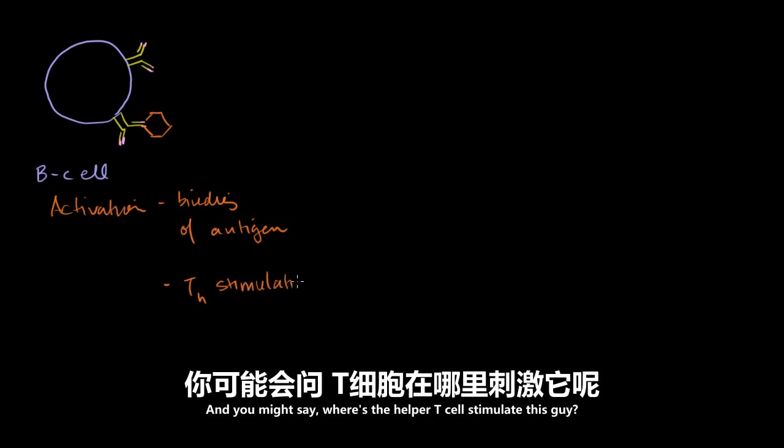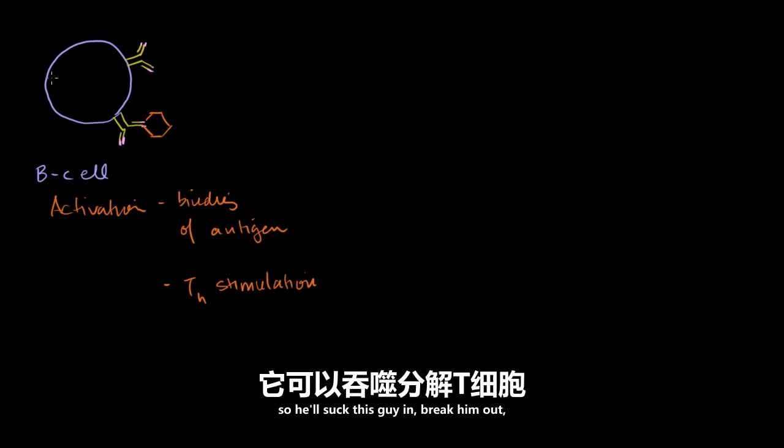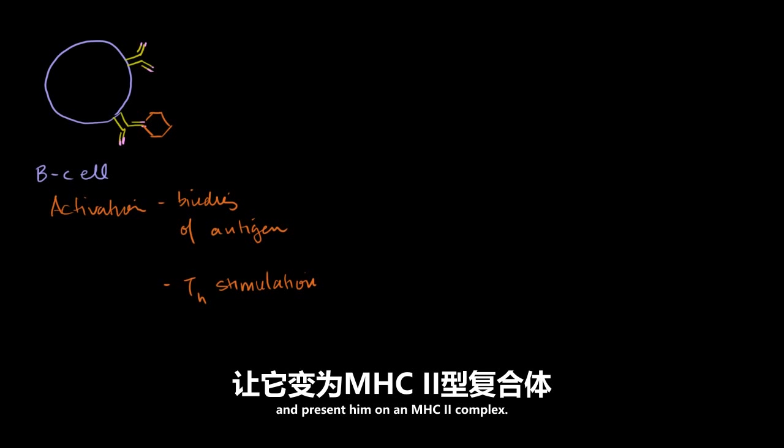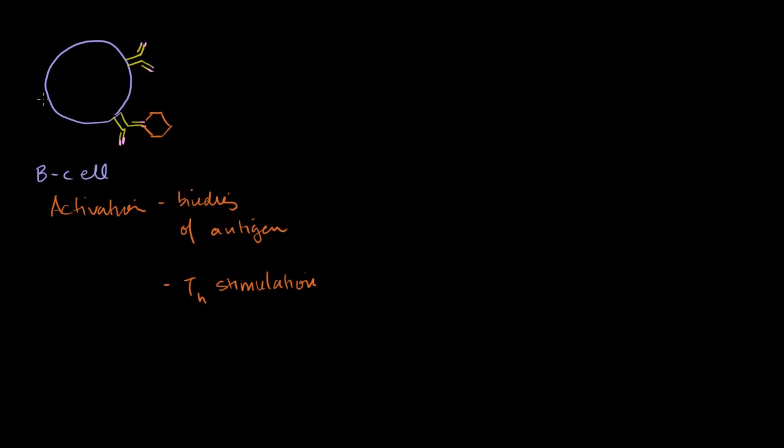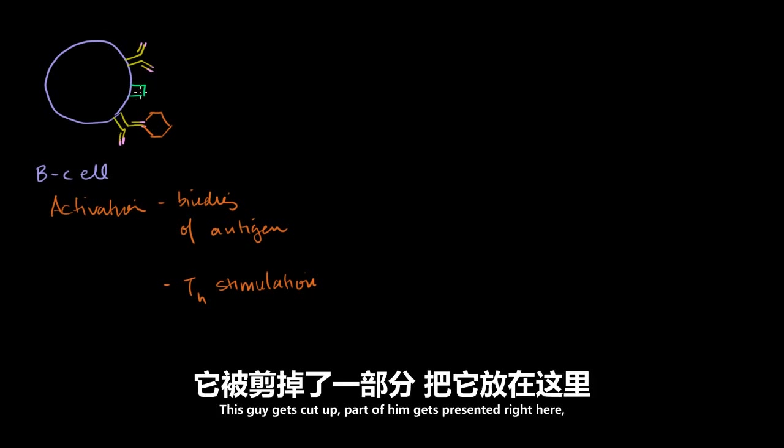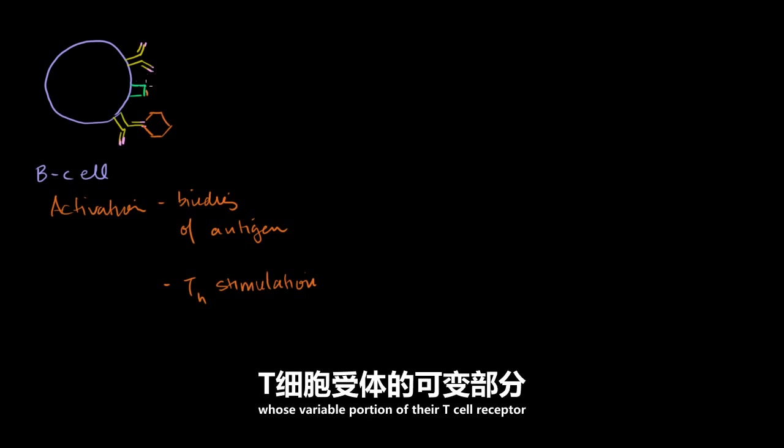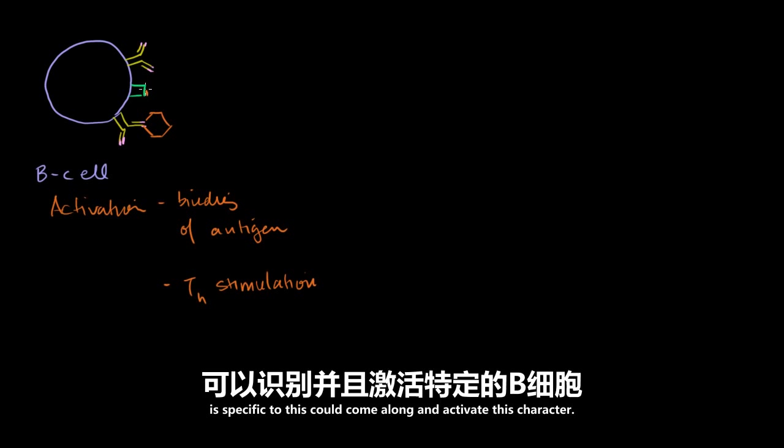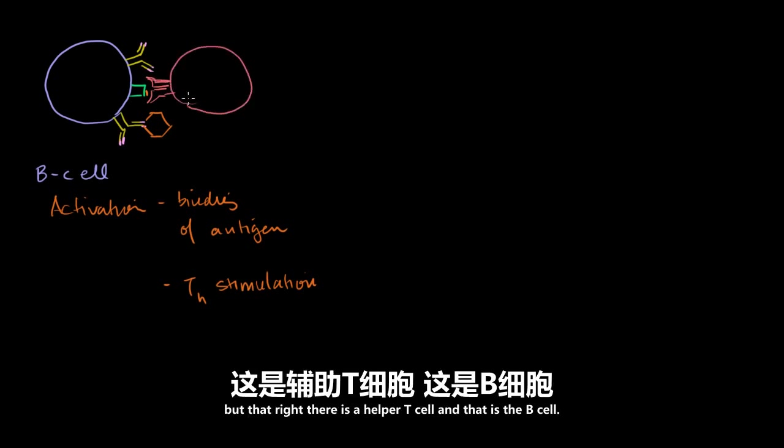And you might say, where does the helper T cell stimulate this guy? Well, B cells were also antigen-presenting cells, so he'll suck this guy in, break him out, and present him on an MHC2 complex. So that's an MHC. Let me do it someplace where I can draw a T cell coming in. Well, let's say this is an MHC2 complex. This guy gets cut up, part of him gets presented right here. And then an activated helper T cell, whose variable portion of their T cell receptor is specific to this, could come along and activate this character. I'm not drawing that receptor well, but that right there is a helper T cell, and that is the B cell.